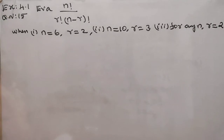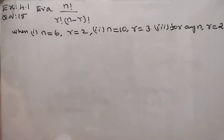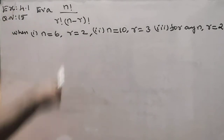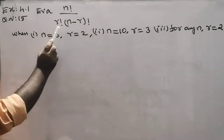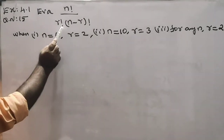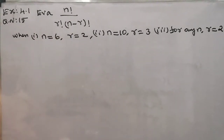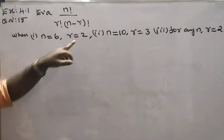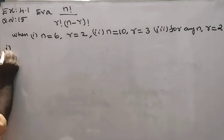Next problem. Exercise number 4.1, Question number 15. Evaluate n factorial divided by r factorial into n minus r factorial. First problem: n equals 6, r equals 2.